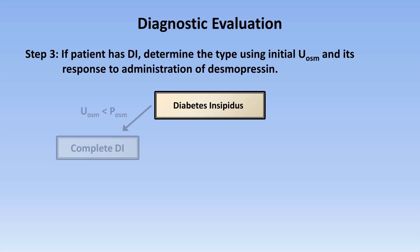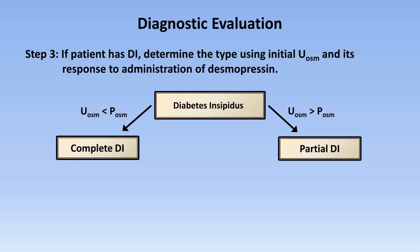So for step 3, those patients who appear to have DI based on an inappropriately low urine osmolality despite hypernatremia, the next step is to look at the urine osmolality and its response to administration of desmopressin, which is an ADH analog that lacks ADH's vasopressor activity. If the urine osmolality is less than plasma or serum osmolality — which can usually be estimated to be about 300 or slightly greater in hypernatremia — the patient has what is termed complete DI, meaning essentially no ADH function. If the urine osmolality is greater than plasma osmolality, there is some degree of functioning ADH present, and the patient is said to have partial DI.